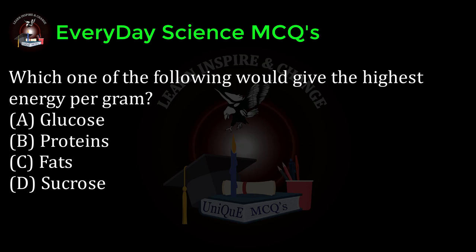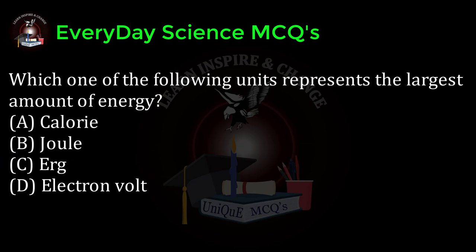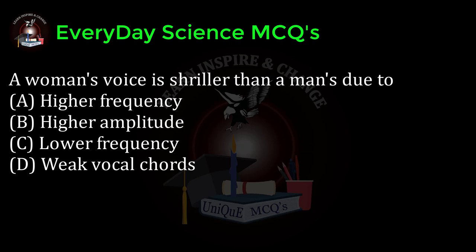Which one of the following would give the highest energy per gram? a) glucose, b) proteins, c) fats, d) sucrose. Correct answer: c. Which one of the following units represents the largest amount of energy? a) calorie, b) joule, c) erg, d) electron volt. Correct answer: a.